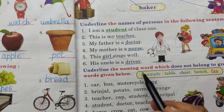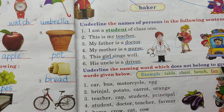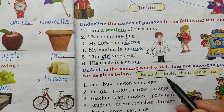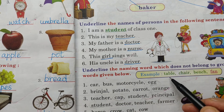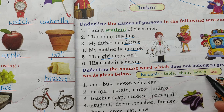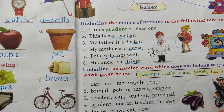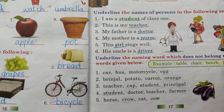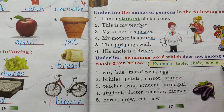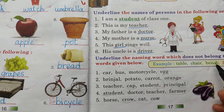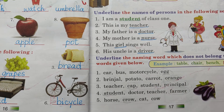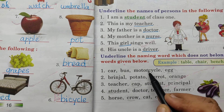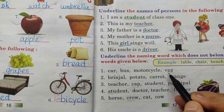Underline the naming word which does not belong to the group of words given below. Example: Table, Chair, Bench - these are furniture. Fan does not belong to this group. Car, Bus, Motorcycle, Egg - egg does not belong to this group.